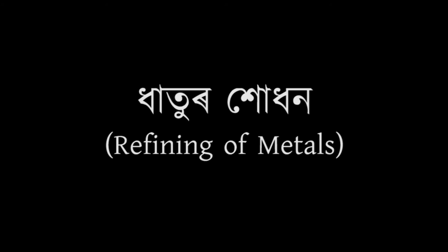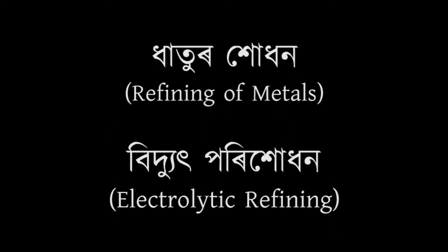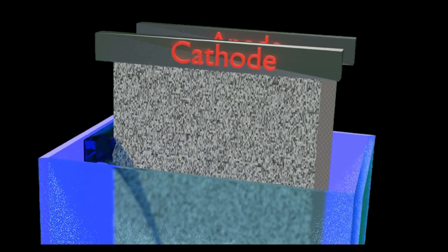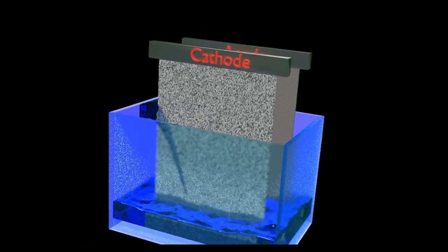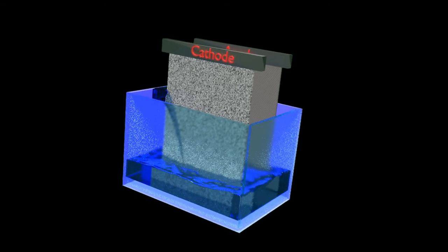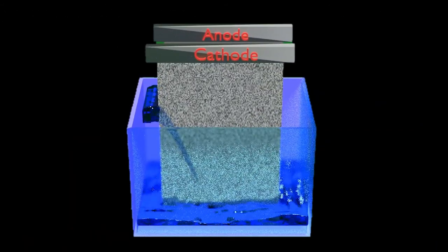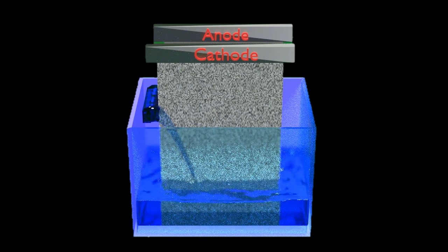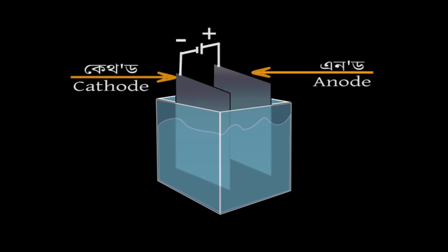This is done by the process of electrolysis. In this process, the impure zinc metal is used as an anode and a thin strip of zinc is used as the cathode. The metal salt is used as an electrolyte. When current is passed through the electrolyte, the impure metal from the anode dissolves into the electrolyte and an equivalent amount of pure metal is deposited on the cathode.